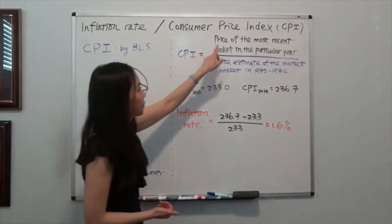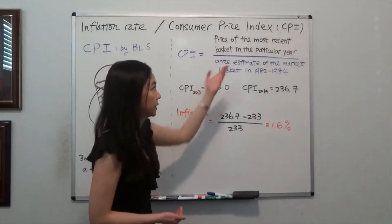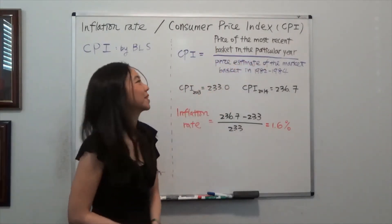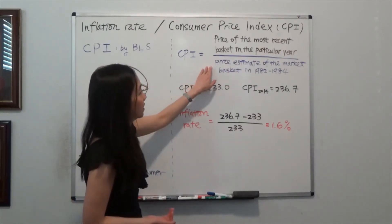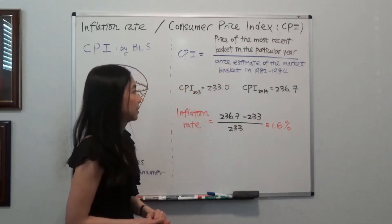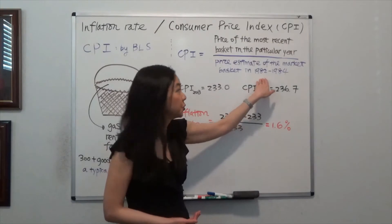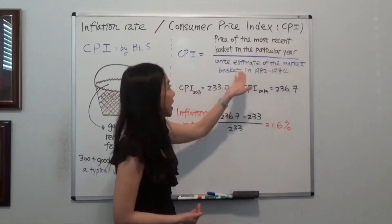That will be the price of the most recent basket in a particular year, say 2013, divided by the price estimate of the market basket in year 1982 to 1984. So that's an estimate.